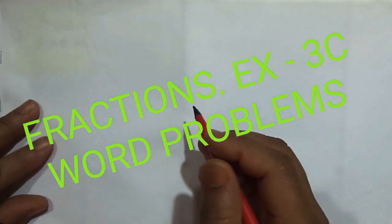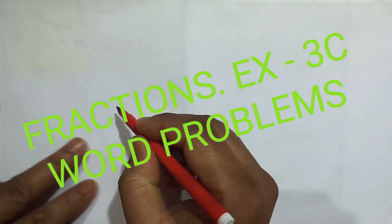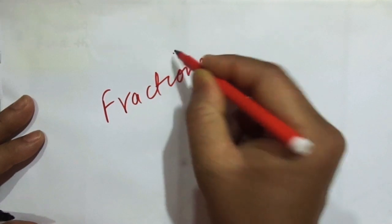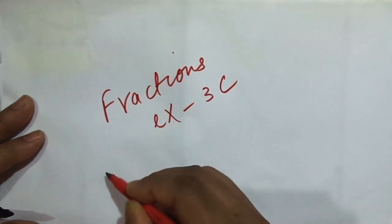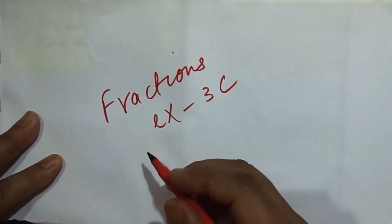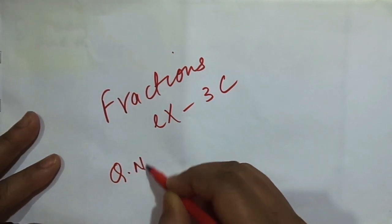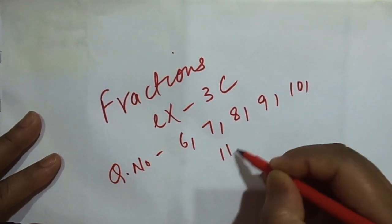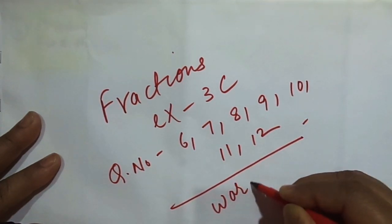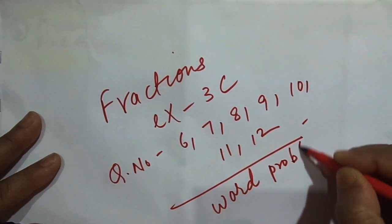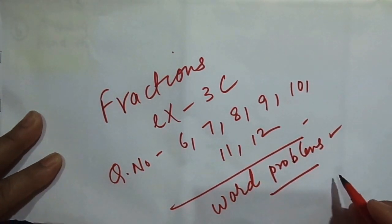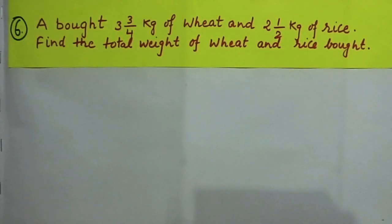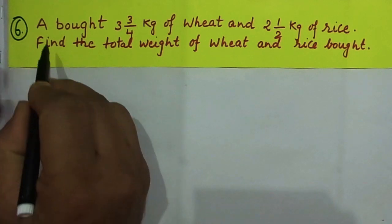We are heading towards the end of the fractions exercise 3C, and the questions we shall be dealing with will be the word problems — questions number 6, 7, 8, 9, 10, 11, and 12. The word problems on exercise 3C will be dealt with right now. Let's start.